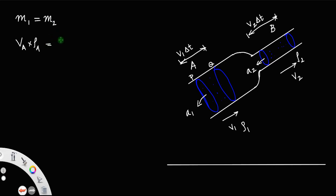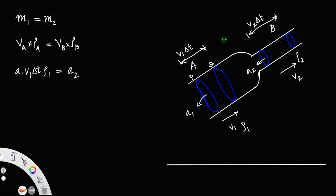Similarly, mass at section B equals volume of the fluid at section B into density of the fluid at section B. Volume equals cross sectional area into length, and length equals V1 delta T, so volume at A equals A1 times V1 delta T. At section B, the cross section is A2 and the length is V2 delta T, multiplied by rho B, the density at section B.